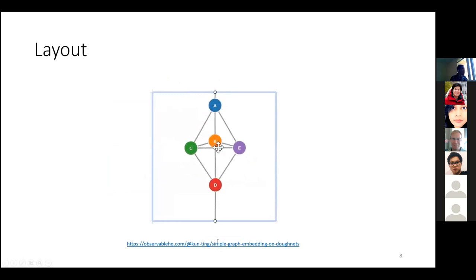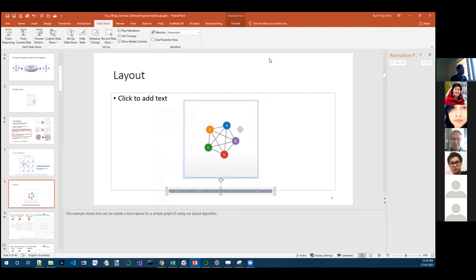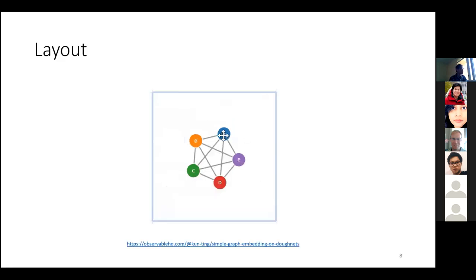This example shows a simple network laid out on torus using a tool. I'd like to share this link in the chat, so feel free to open the link, and then you can try yourself on this notebook. It shows how we can obtain a torus diagram from a standard unwrapped force visualization. There are some options for you to choose in the tool as well.